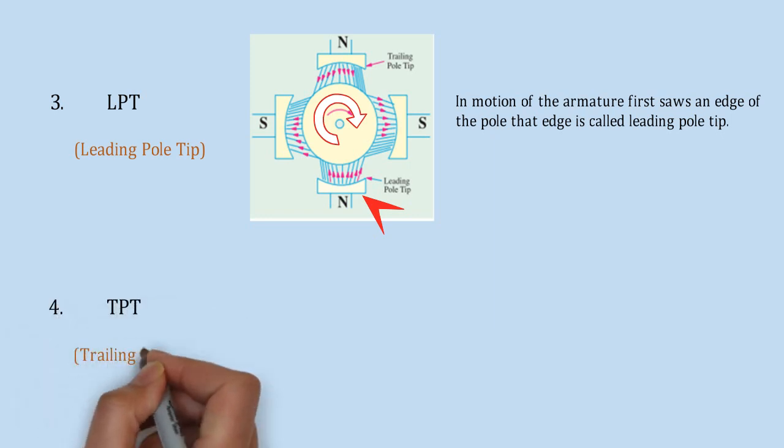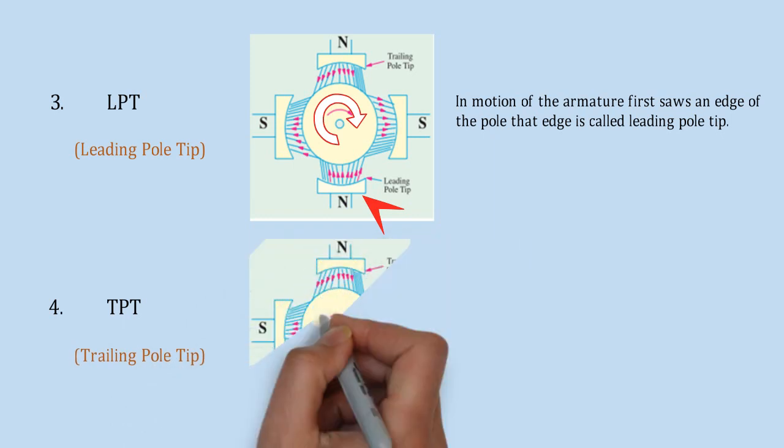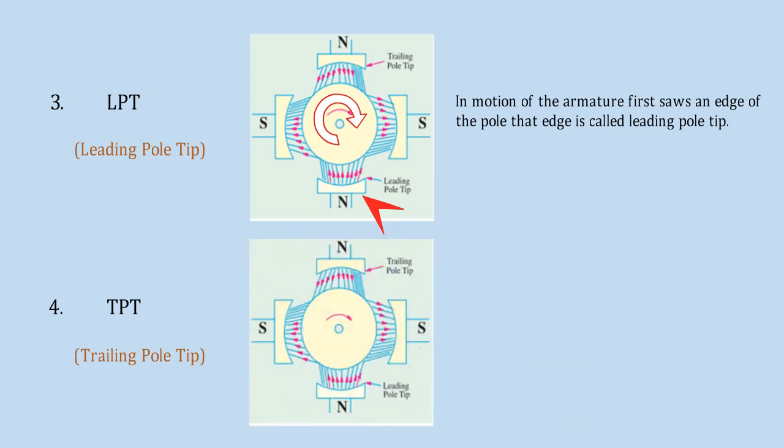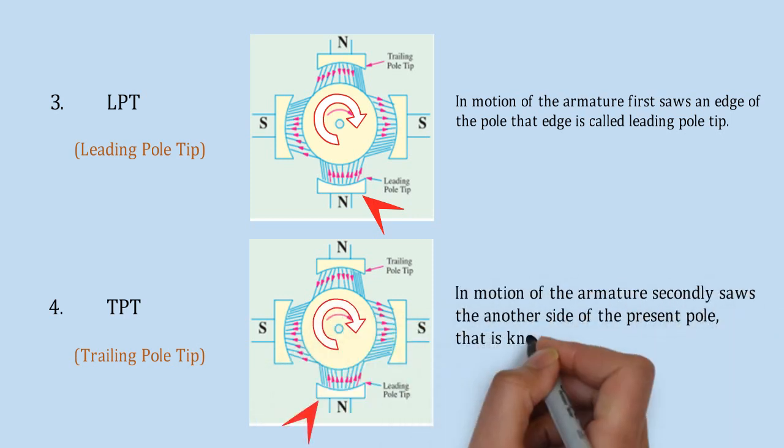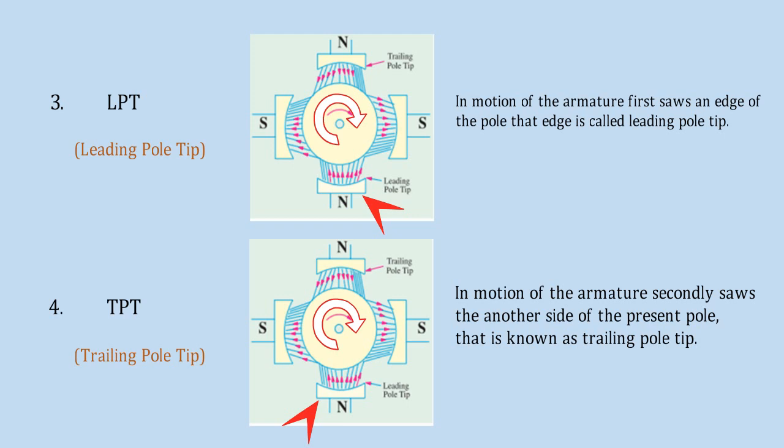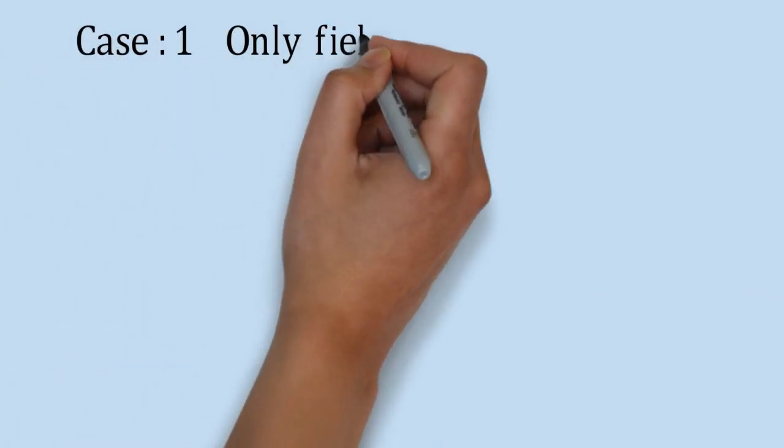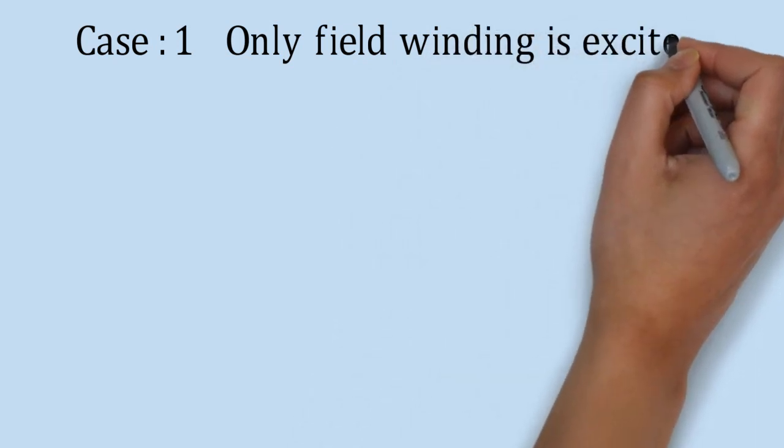Last is trailing pole tip. Again, armature conductors are rotating in clockwise direction. So, TPT may be defined as the pole tip which meets second during the rotation by armature conductors. We will understand armature reaction by three cases.